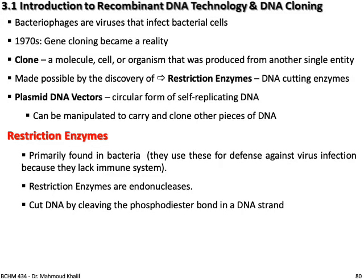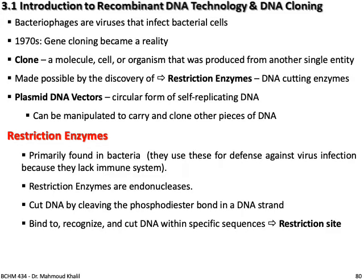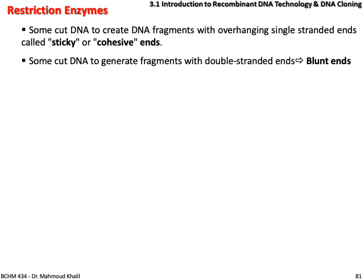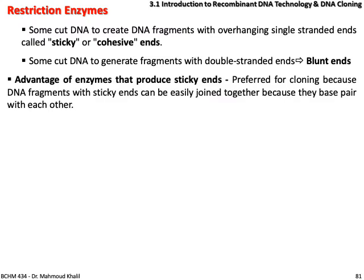These enzymes are endonucleases and cut DNA by cleaving the phosphodiester bond in the DNA strand. They bind and recognize DNA with specific sequences called restriction sites. Each restriction site is palindromic, meaning it reads the same forward and backward on opposite strands of DNA — remember the word 'madam', you can read it the same from right or left. These enzymes cut DNA to create fragments either with overhanging single-stranded ends called sticky or cohesive ends, or with double-stranded ends called blunt ends.